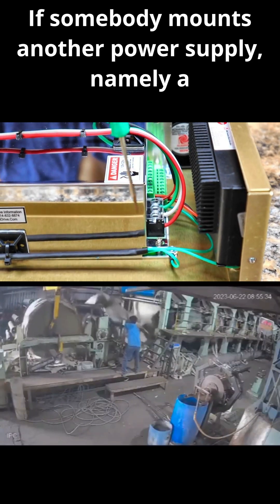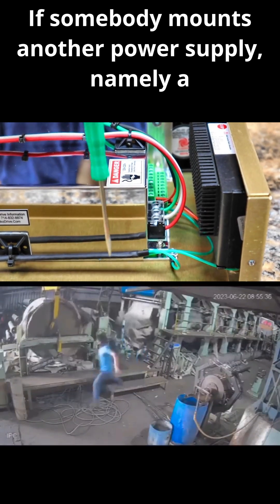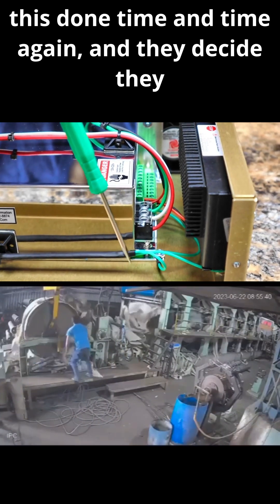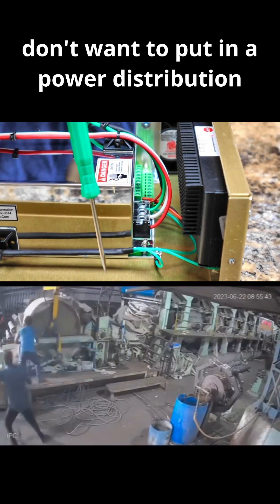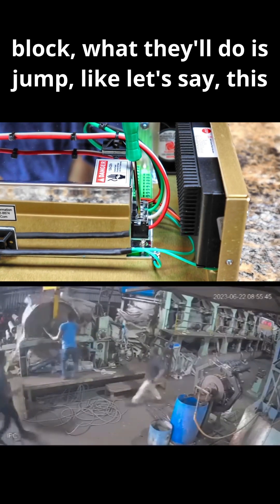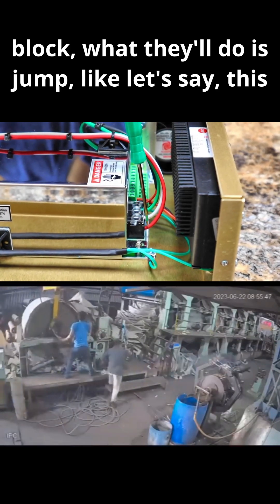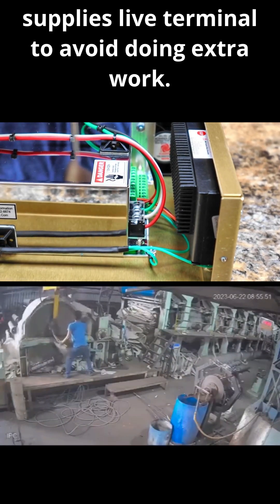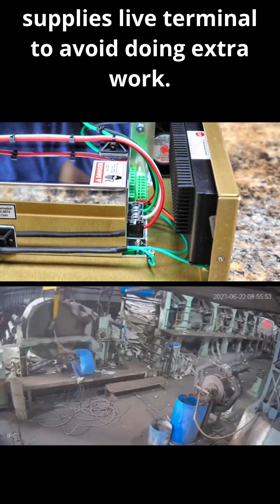If somebody mounts another power supply, namely a YouTube content creator, because we've seen this done time and time again, and they decide they don't want to put in a power distribution block, what they'll do is jump, let's say, this live lead over to the other power supply's live terminal to avoid doing extra work.